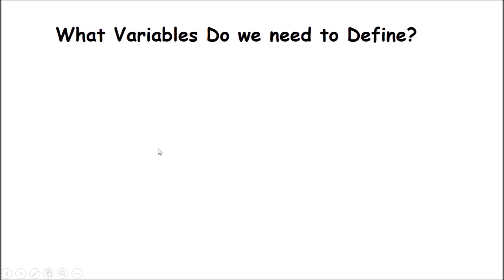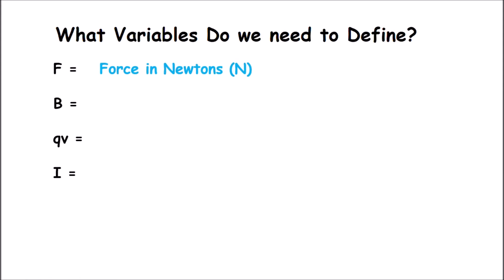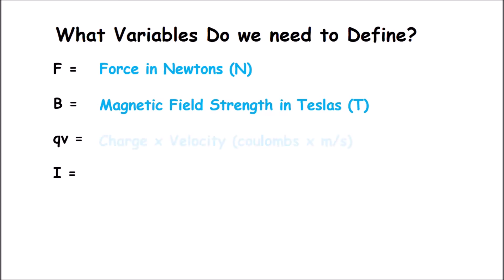Let's define the variables we'll be using. F is force, measured in Newtons. B is something new — that's magnetic field strength, and its units are Teslas. Not after the car — the car was named after Nikola Tesla, and magnetic field strength is also named after Nikola Tesla. Then we have QV — charge times velocity — because to create a magnetic field, the charge has to be moving, so we need both charge in Coulombs and velocity in meters per second. And lastly, current is moving charges confined to a wire, measured in amperes.